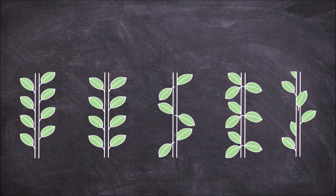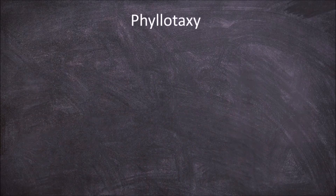The arrangement and number of leaves on the stem of a plant is genetically determined and is often a characteristic of a particular species. Phyllotaxy is the term used to describe this arrangement of leaves on the stem.